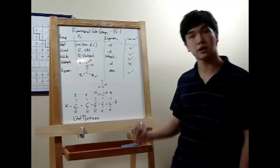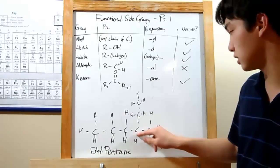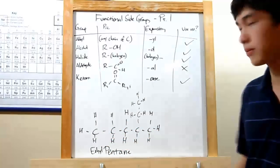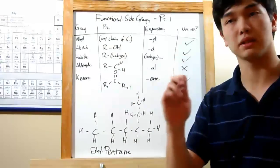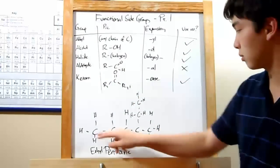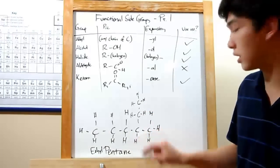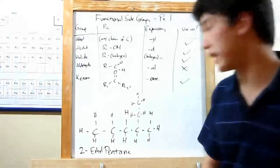Basically, that means you need to number your carbons to indicate where your alkyl group is located. So there are two ways to do this. You start at the end of the chain and work the other way. This chain has two ways, so you could go one, two, three, four, five, or the other way, one, two, three, four, five. The point of this is to tell where this is, but you also need to keep the number as low as possible. So instead of saying this is on the fourth carbon, you call it two, since two is less than four. So this is going to be called two ethyl pentane.